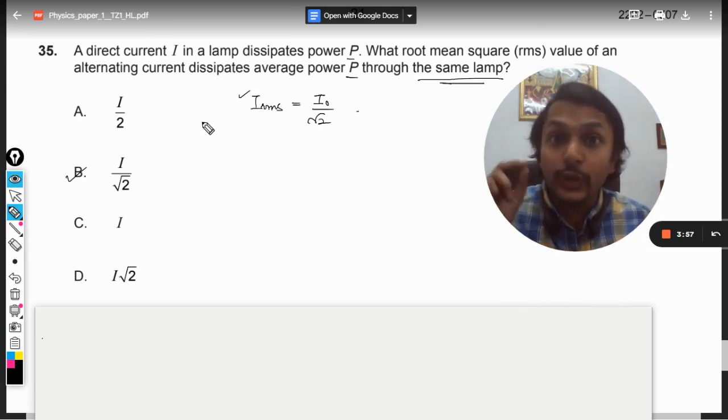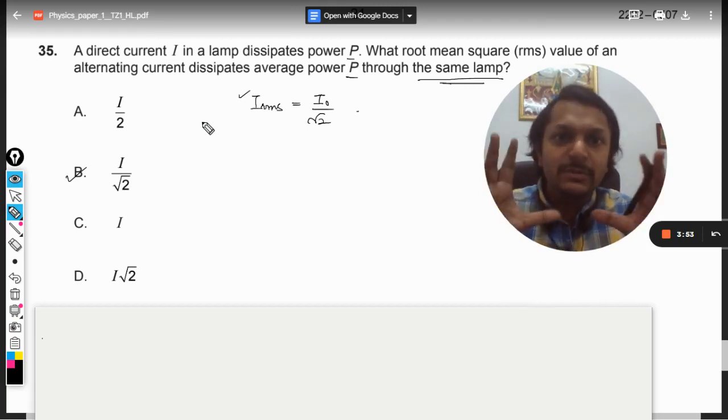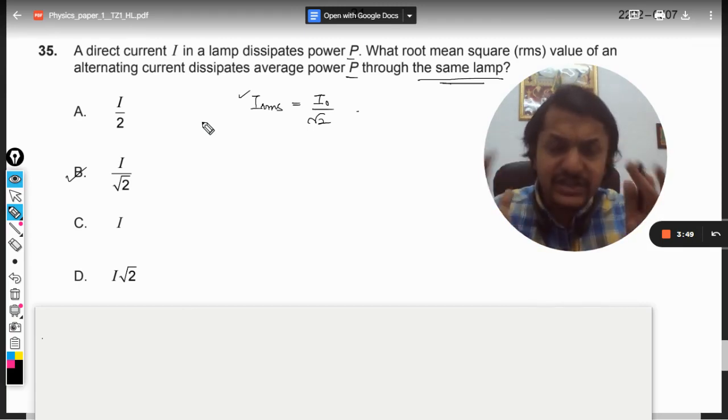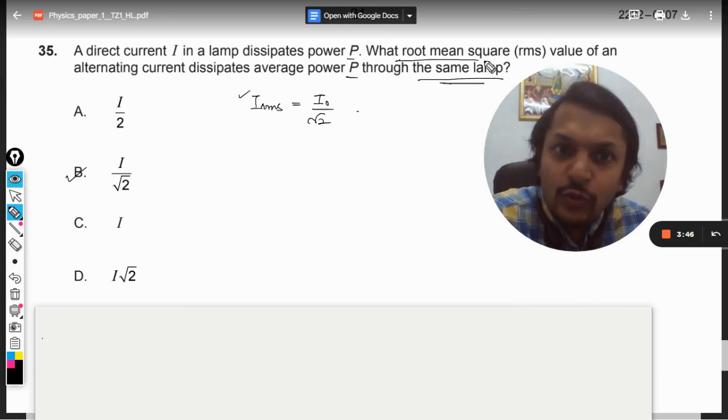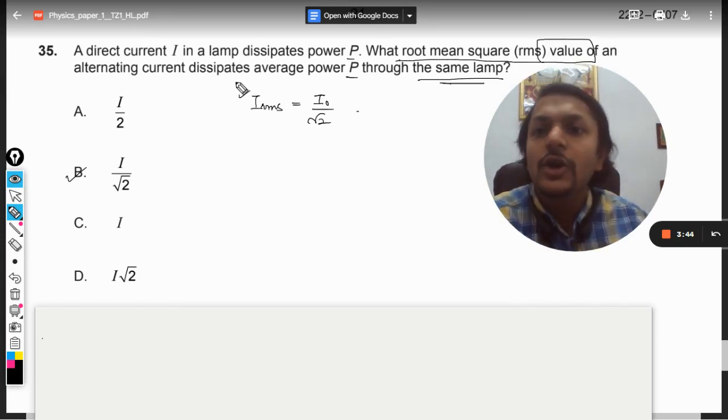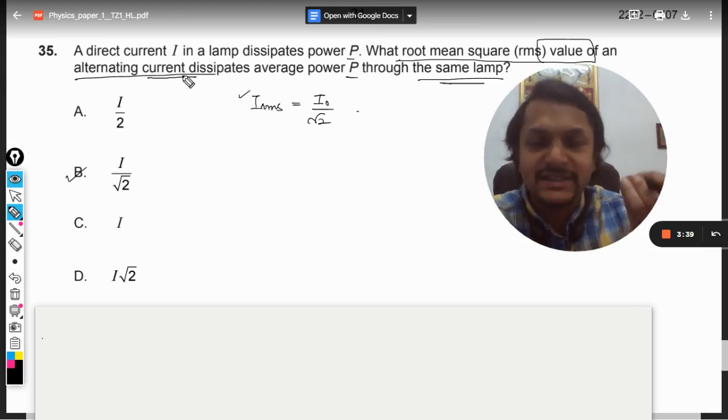But this is not what is intended by this question. The question, the statement is a little bit twisted and we must understand what this question wants to say. What root mean square value of an alternating current and we don't know what is an alternating current. What is the alternating current? What is the peak value? We don't know.